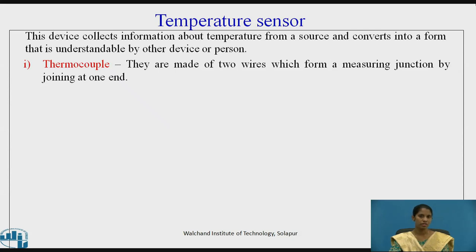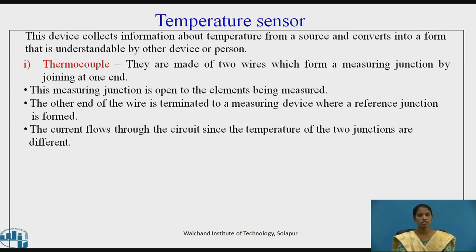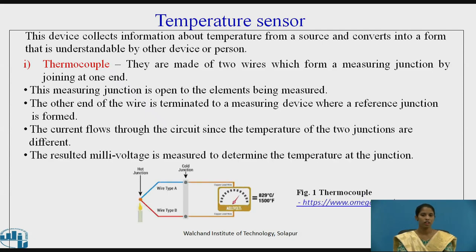The first temperature sensor is the thermocouple. A thermocouple is made up of wires which form a measuring junction at one end. This measuring junction is open to the elements being measured, and the other end of the wire is terminated where a reference junction is formed. Current flows through the circuit since the temperatures of the two junctions are different. Figure 1 shows the thermocouple, with a cold junction and a hot junction, and two wires of type A and type B.